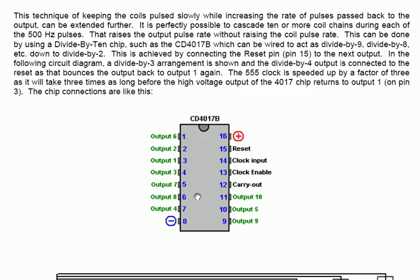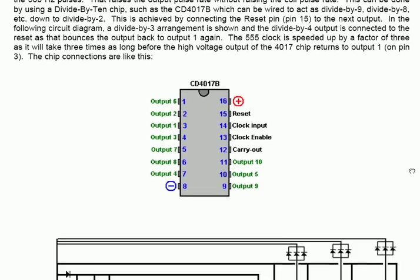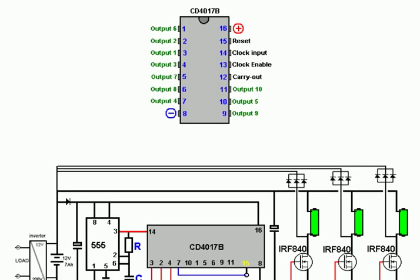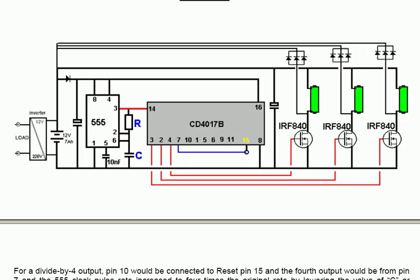So if you are doing a divide by 3 arrangement, then the divide by 4 pin, which is output number 4, which is pin 7, is connected across to the reset. And when 4 triggers, it immediately pushes the chip back to output on pin number 1, which is physical pin 3. So it's on the way they have the pins arranged, but I imagine they know exactly what they're doing. When you're doing that, obviously, the 555 clock pulse is speeded up by a factor of 3, because it's going to take 3 times as long before the high voltage output of the chip returns to output 1. The chip connections are shown there in this particular diagram. And the arrangement for the circuit, just in, for example, with 3 transistors driving 3 coils.